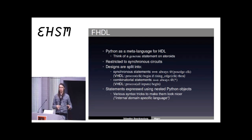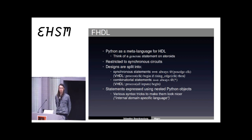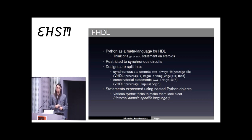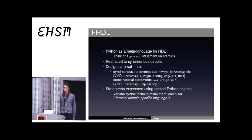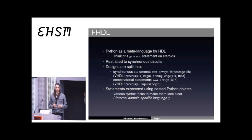A meta-language is a language which enables you to make statements about a language in another language. You can think of it as a code generator, basically. If you have used Verilog or FHDL, there is something called a generate statement, which is typically a for loop that will repeat the statements. But instead of just having for loops and other very basic constructs like that, Migen and FHDL enable you to have the full power of Python to generate code and generate hardware designs.